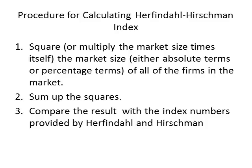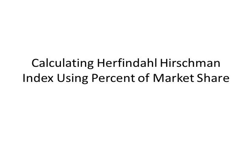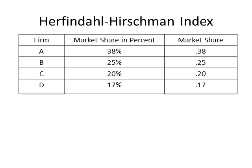First, square the market size — multiply the market size times itself — either in decimal terms or in percentage terms, for all the firms in the market. Then sum up the squares. Compare the result with the index numbers provided by Herfindahl and Hirschman. Let's see how the HHI is calculated.